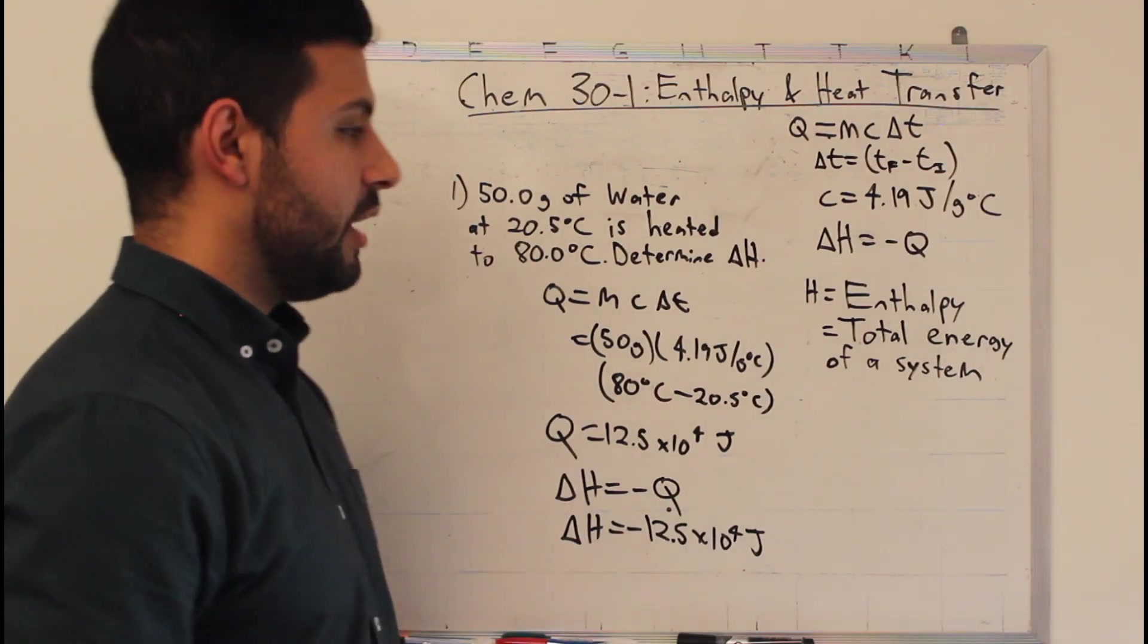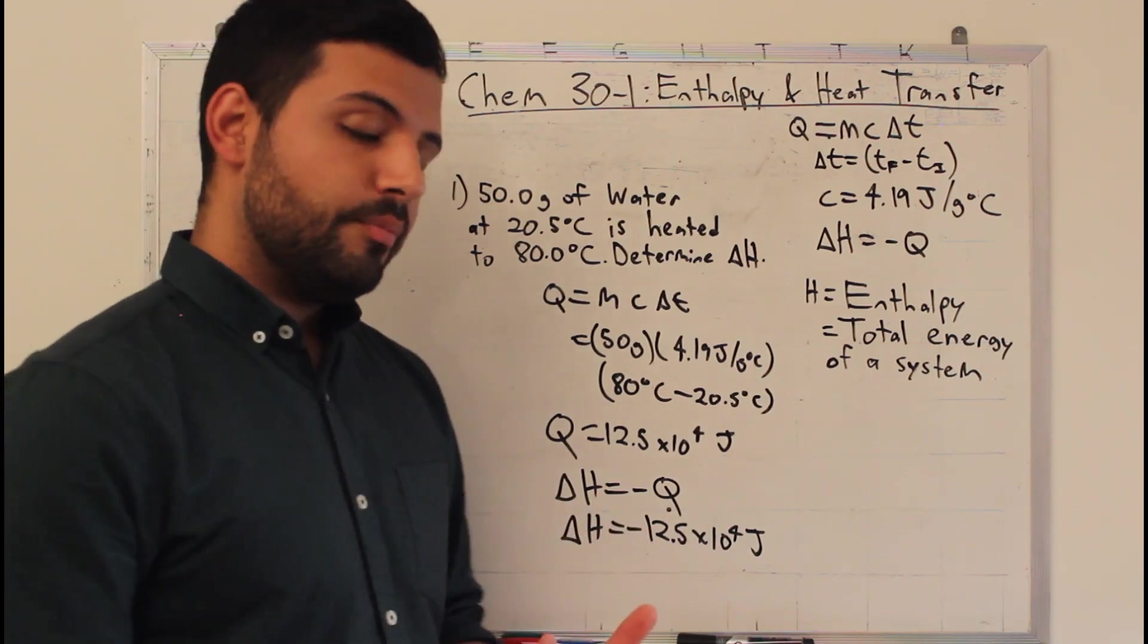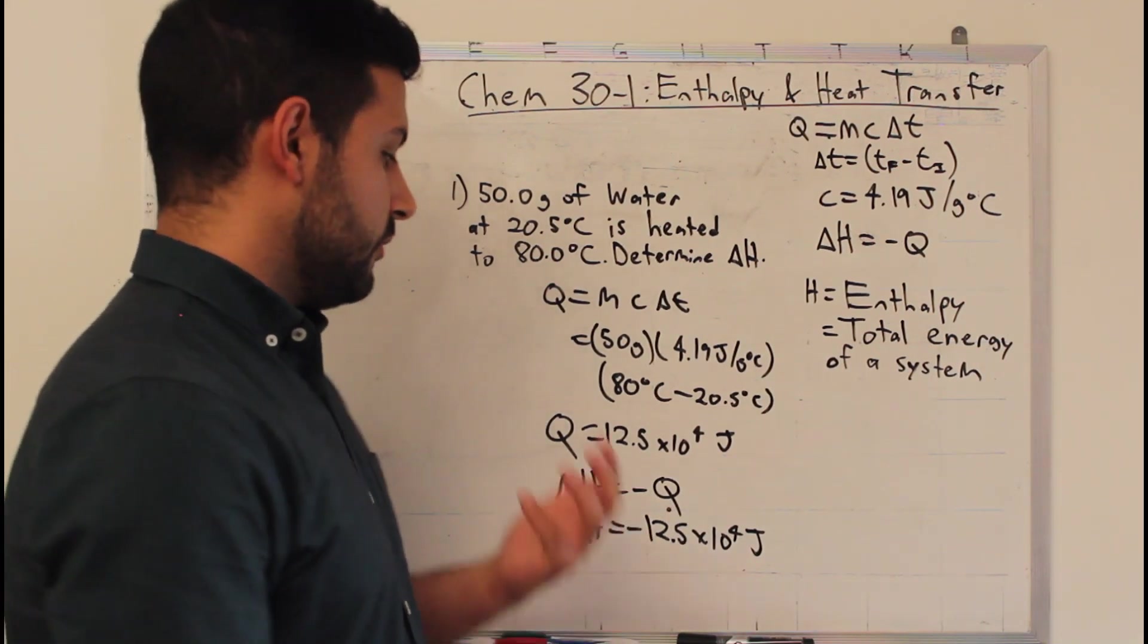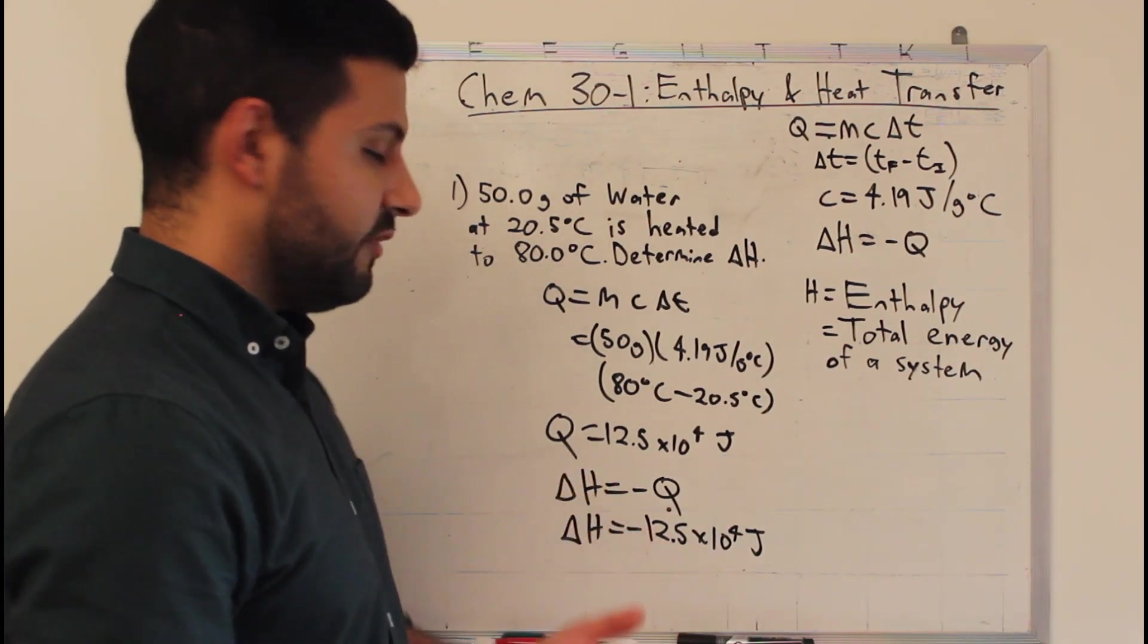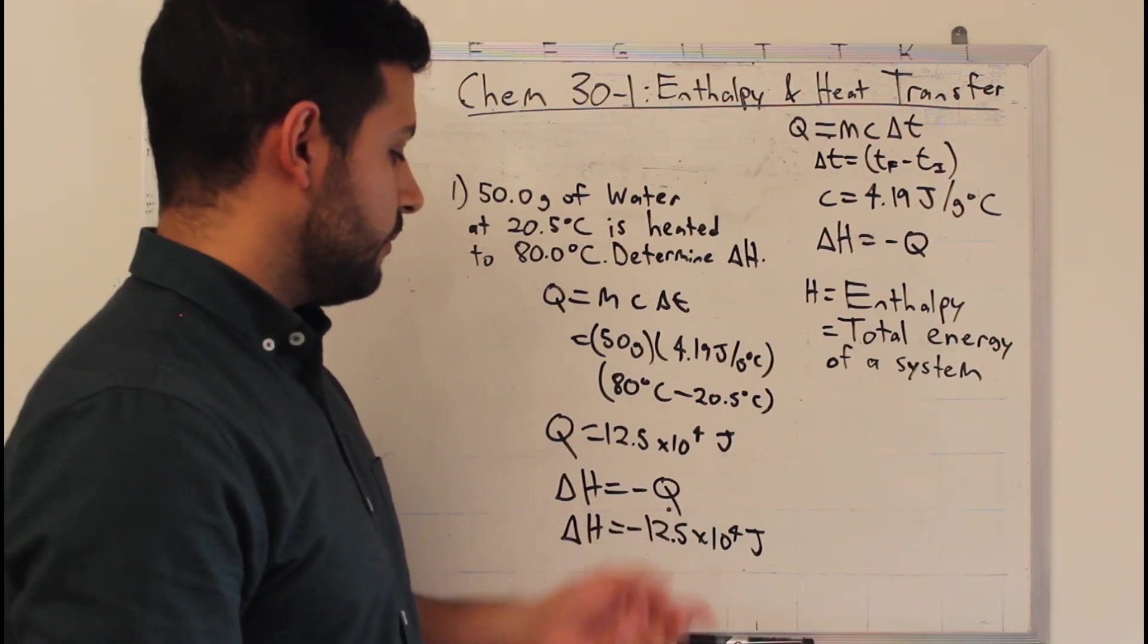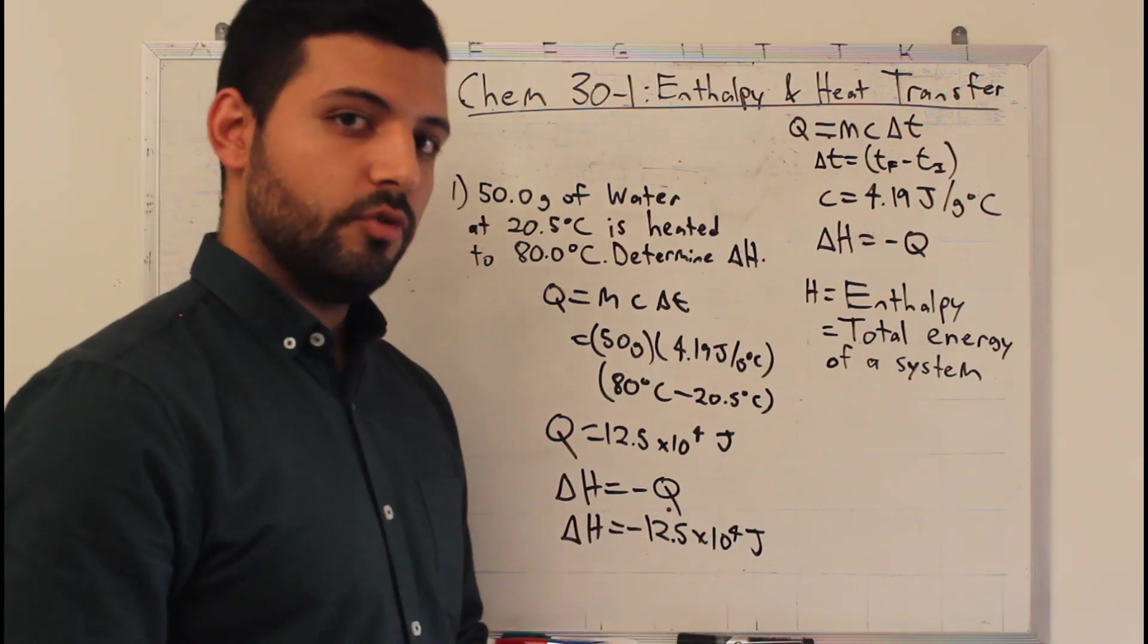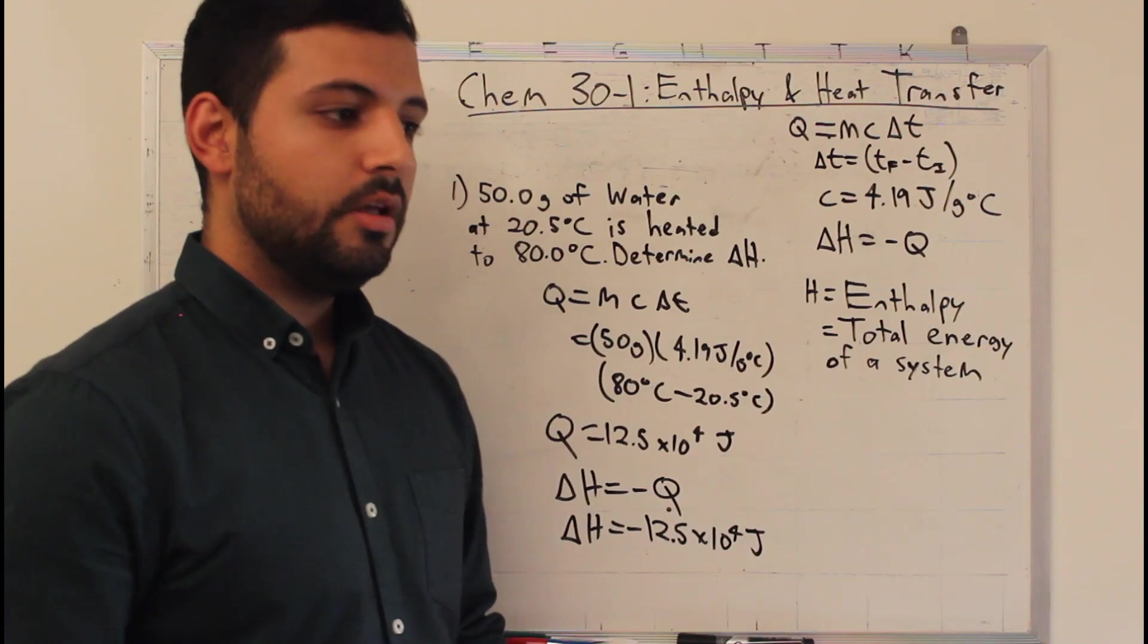So, for example, if this 50 grams of water is in a cup being heated by a candle, you could say the candle had given the cup of water 12.5 times 10 to the 4 joules. And that's the whole idea with enthalpy.